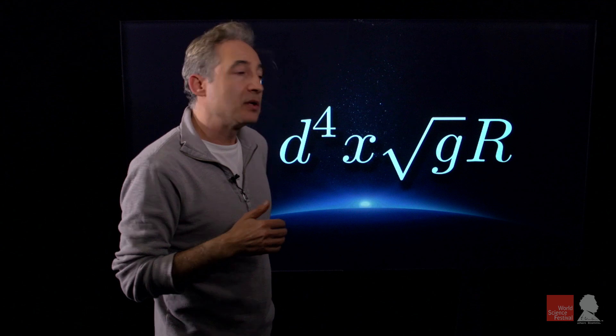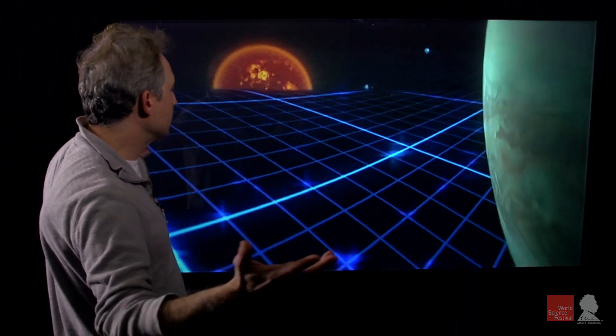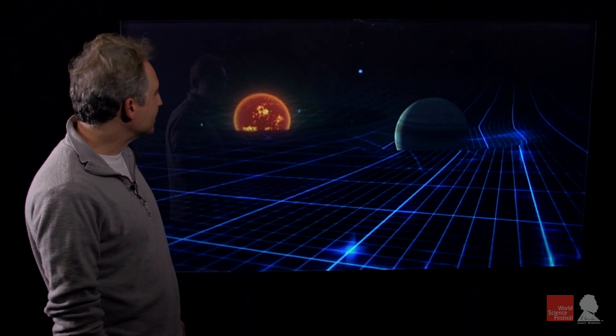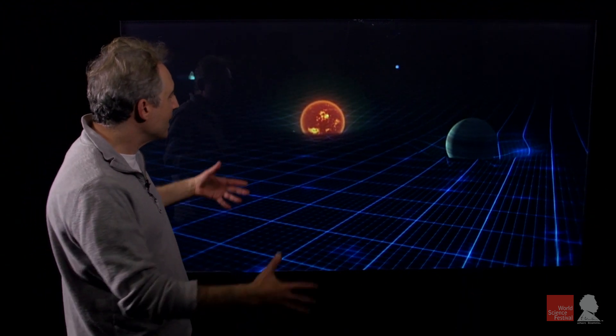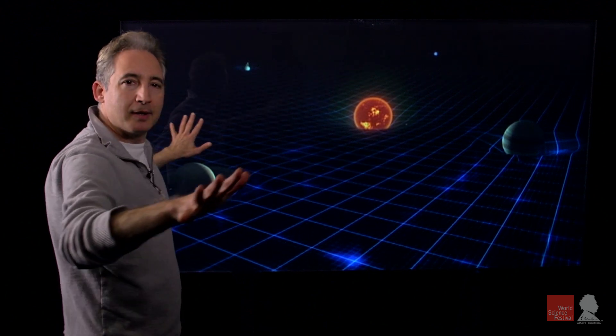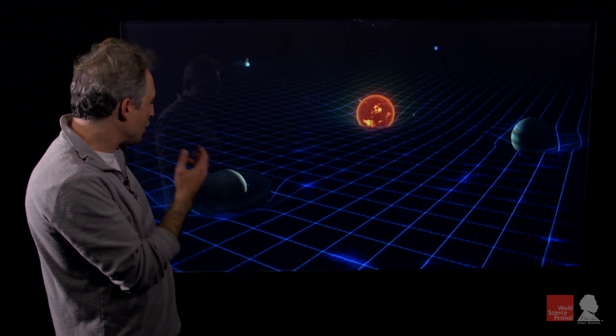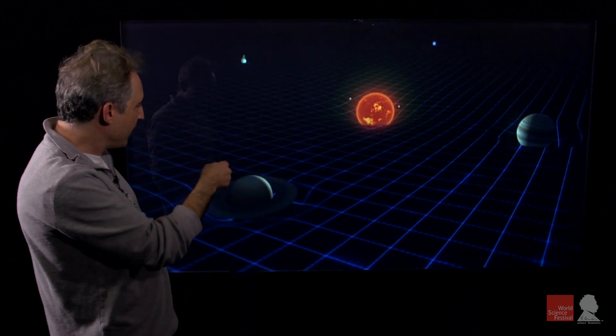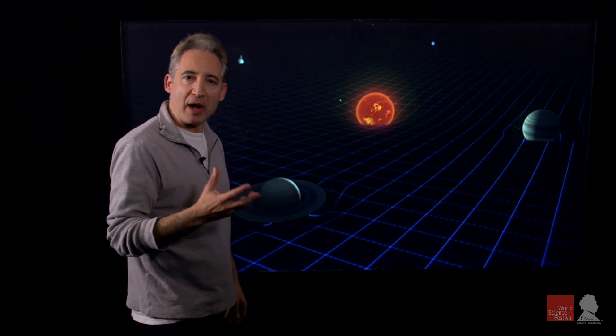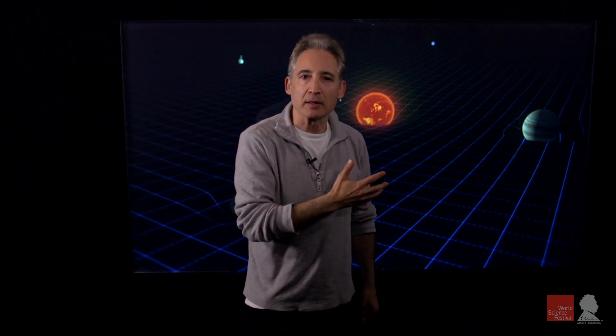But regardless of which equation you use, the final picture, well, it's just beautiful, it's just wonderful. Einstein, Hilbert, they're telling us that gravity is communicated by the shape of the universe, warps and curves in space and time. This is the heart of the new picture of how gravity works. This is the heart of the general theory of relativity.